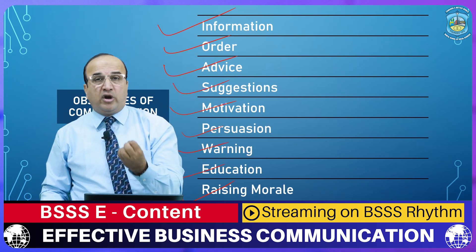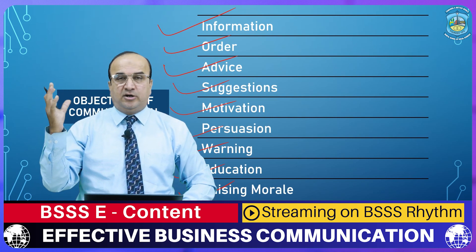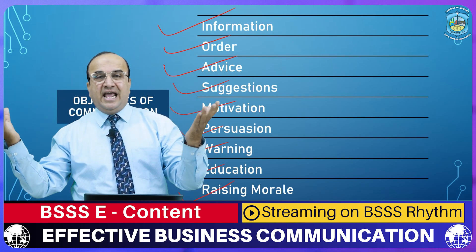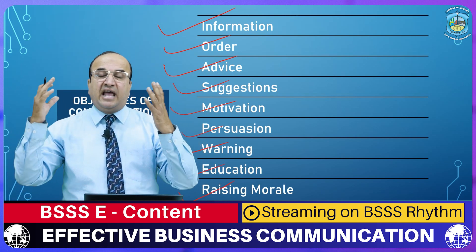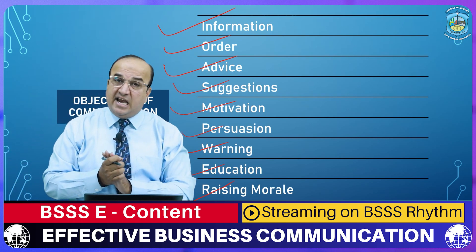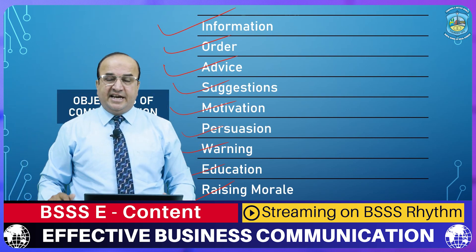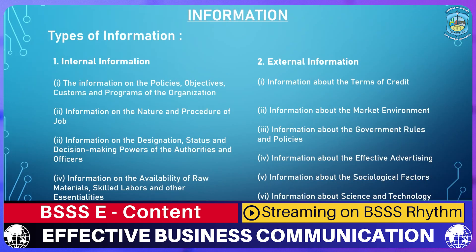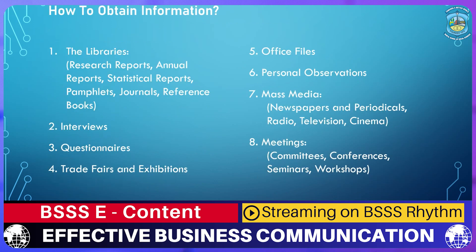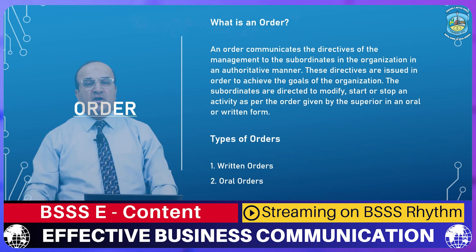Under verbal communication we have oral and written. Under non-verbal communication we have body language, kinesics, gestures, posture, artifacts, haptics, chronemics, proxemics, paralanguage, and sign language. There are also different types of information — internal and external — both important for smooth functioning of a business organization. Sources of obtaining information include interviews, libraries, questionnaires, files, websites, electronic media, and print media.